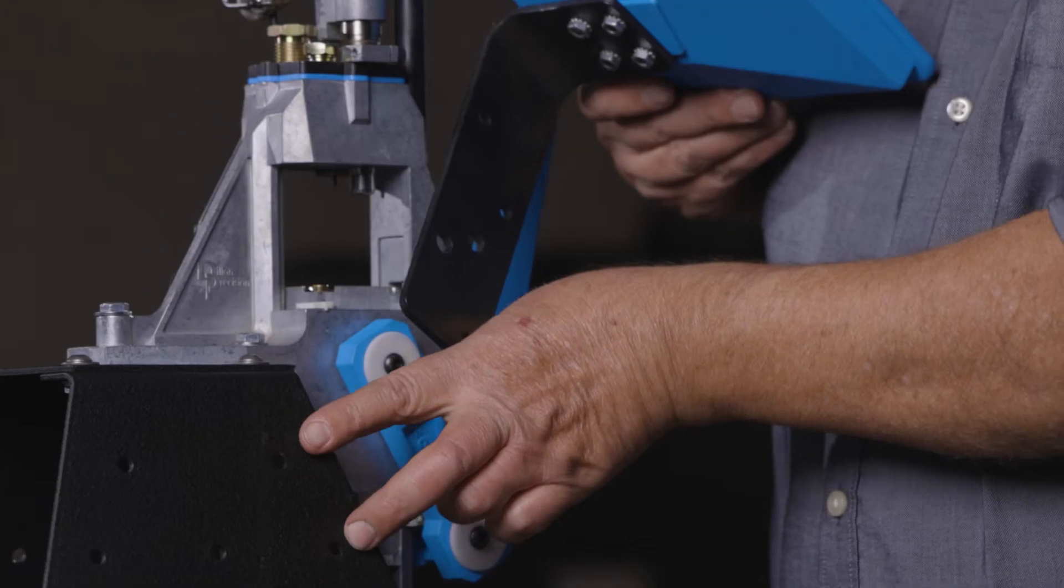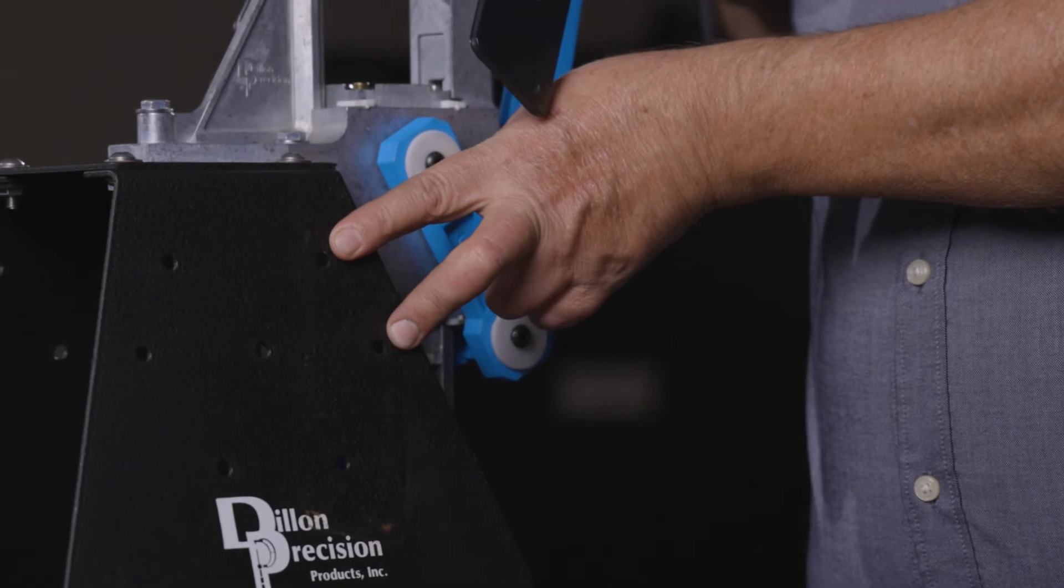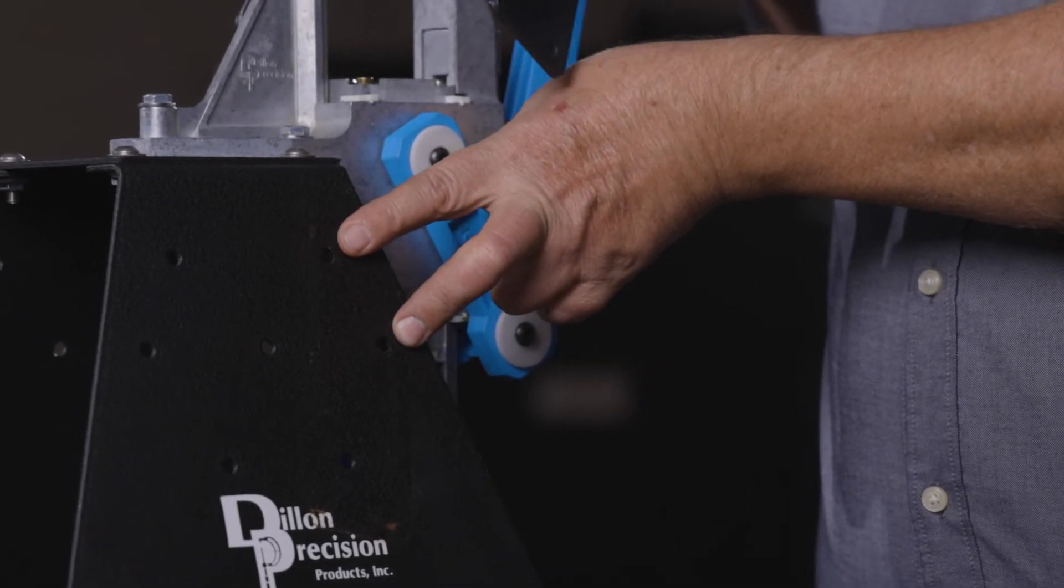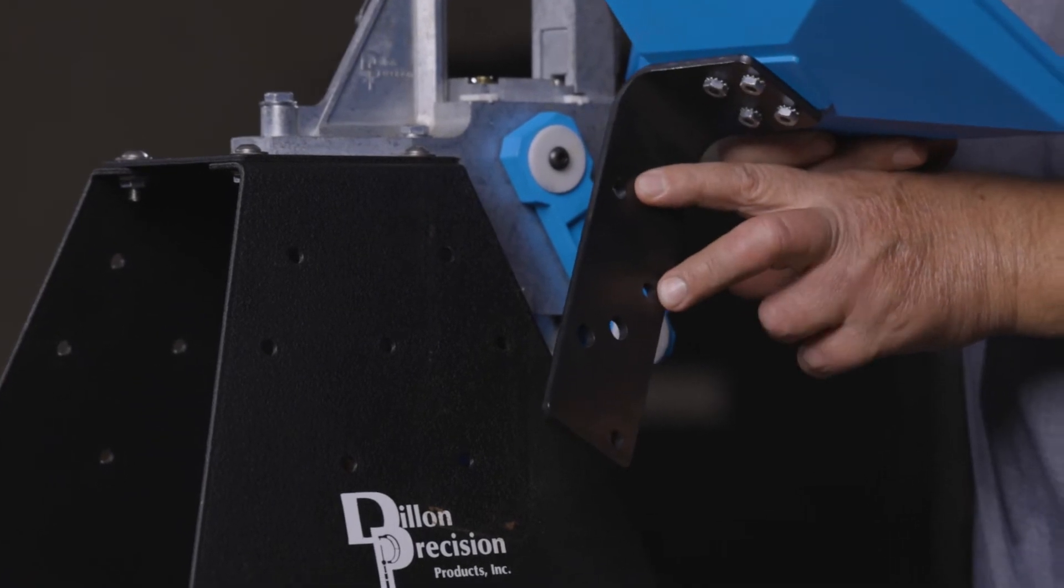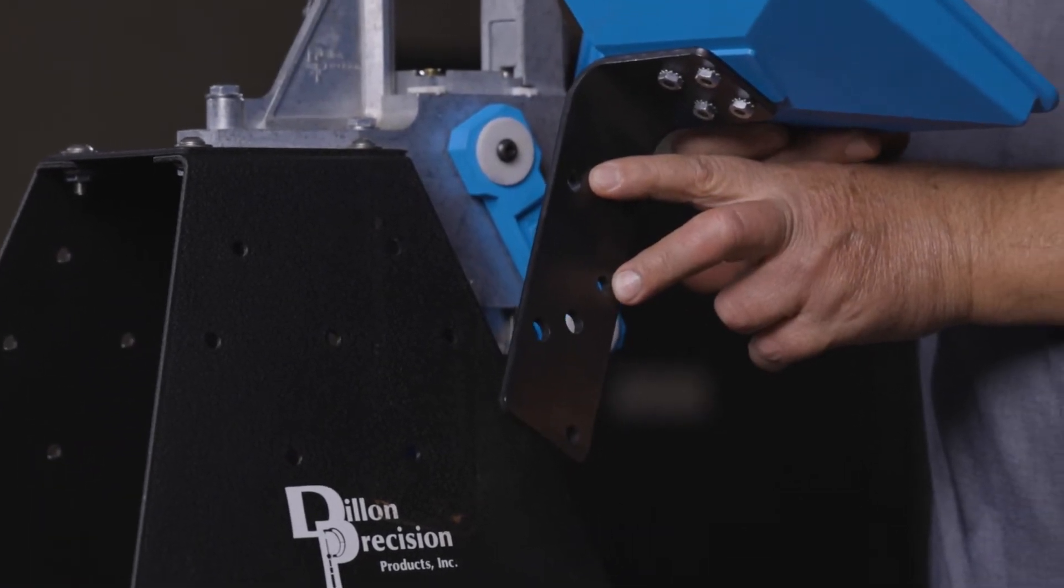So we're going to use these two holes on the side of the strong mount and we're going to use these two holes on the bracket for the bullet tray.